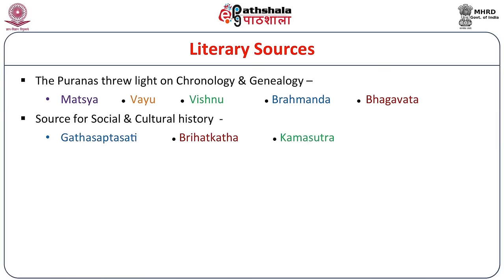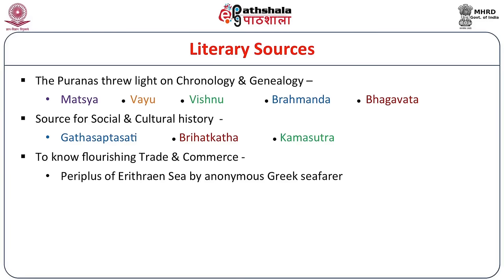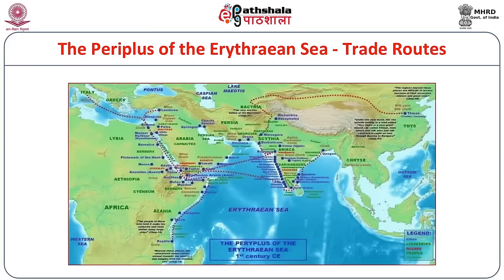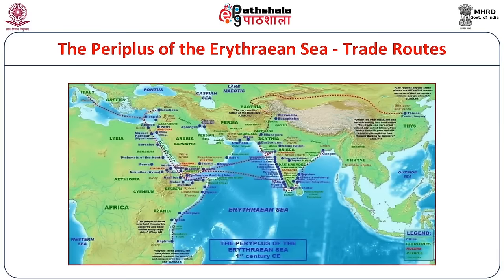Besides the Puranas, for the social and cultural history of the Shatavahanas, sources include Hala's Gatha Saptashati, Gunadya's Vrihat Katha, Sarva Varma's Katantra Vyakaranam, and Vatsyayana's Kamasutra — providing interesting details about social, economic, and religious life. To know about trade and commerce of the Shatavahana period, the Periplus of the Erythraean Sea, written by an anonymous Greek author, provides information about trade centers, ports, and merchandise carried between Shatavahanas and the Roman Empire.